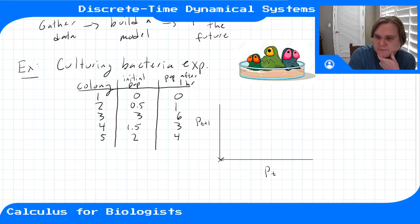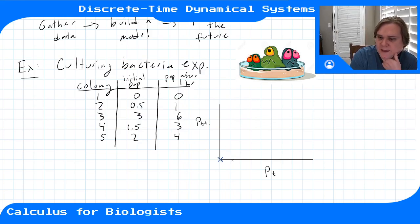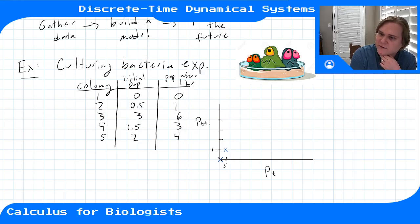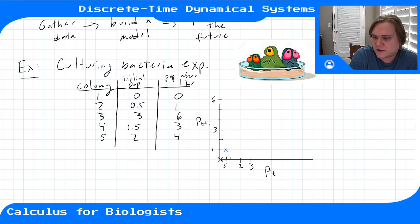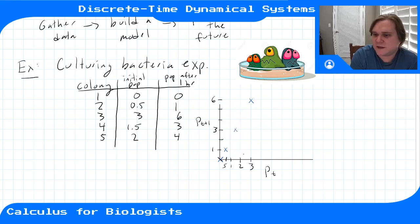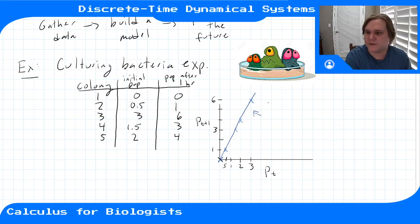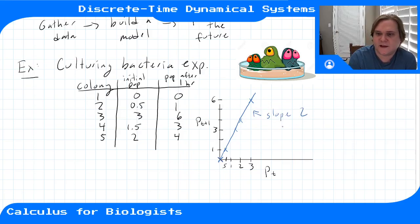If we add our data: at zero, there were zero — started with zero, ended up with zero an hour later. At half a million, ended up with one million. At one million, ended up with two million. At 1.5 million, three million. And when we started with two million, we ended up with four million. This data actually lies on a nice clean line, and if we check the slope of that line, the slope here is two — each population is doubling after one hour.